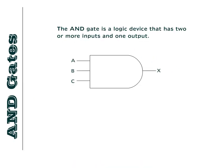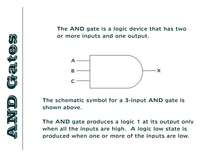The AND gate is a logic device that has two or more inputs and one output. The schematic symbol for a three-input AND gate is shown above. The AND gate produces a logic 1 at its output only when all inputs are high. A logic low state is produced when one or more of the inputs are low.